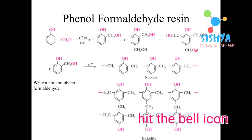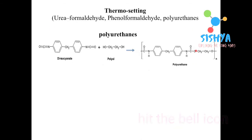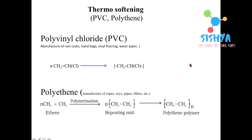The last thermosetting polymer is polyurethane, which is formed when a diisocyanate reacts with a polyol; the newly formed compound is called polyurethane.